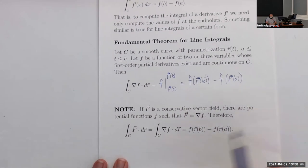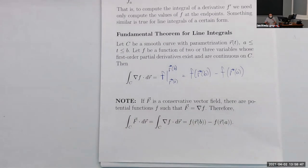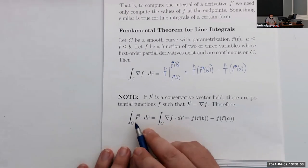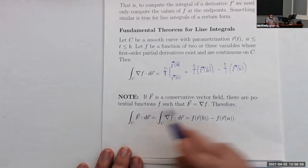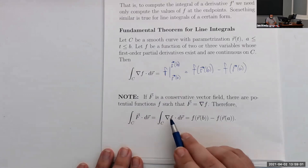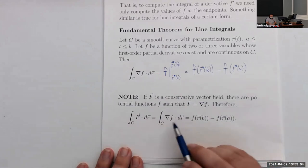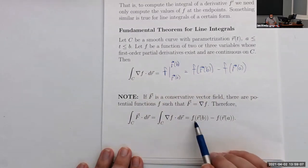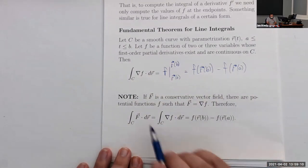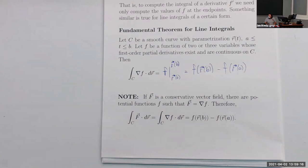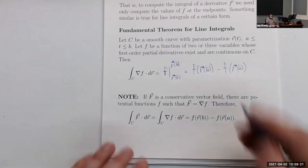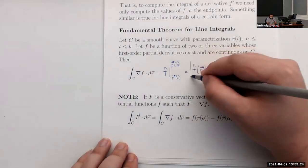Remember we were talking about conservative vector fields — the nice thing about them is that they are the gradient of some other function. So if you do the line integral of a conservative vector field, you can rewrite f as the gradient of something else and then use the fundamental theorem for line integrals to write it as f of r(b) minus f of r(a). This works for general vector fields so long as they're conservative. The result here is a scalar, not a vector.